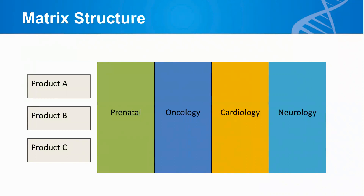Probably most common — and we see a lot of companies moving to this — is a matrix structure. This is my personal preference, where you have multiple cross-functional and cross-business unit groups. Individuals within the matrix will often have more than one manager: a solid line reporting relationship to one person but some dotted line reporting relationships to others. The great thing about this model is that employees have more variety and exposure — they're working on multiple products across different cross-functional teams.